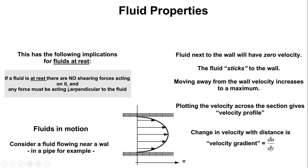When fluids are at rest, it implies that there are no shearing forces acting on them, and if there is any force acting on this fluid it is supposed to act perpendicular to the fluid. So we can say: a fluid is at rest when there are no shearing forces. Even if your container is cylindrical, spherical, or has some curve, the force acting at that point is supposed to be perpendicular — in other words, tangential to the curve.